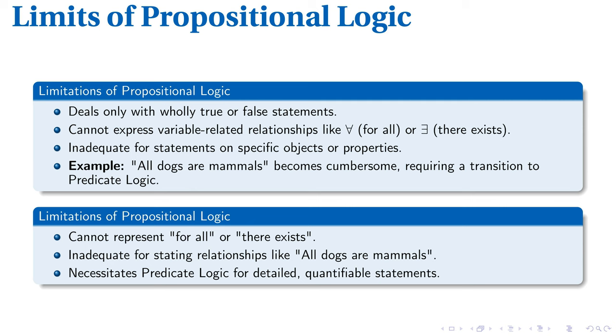Propositional logic presents claims as whole truths or falsehoods. Its limitations surface when we deal with variable-based relationships, such as for all x or there exists an x. Detailed facts about specific objects or their features aren't within its realm either. Now let's imagine a statement: all dogs are mammals. Attempting to express this within the propositional logic framework becomes unwieldy and illustrates its inadequacy in capturing such nuance.